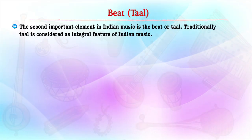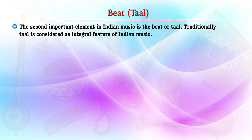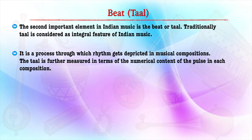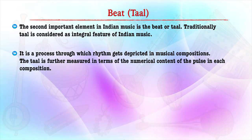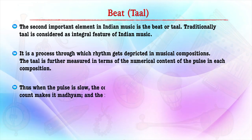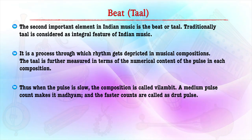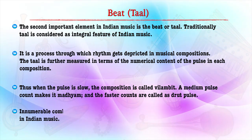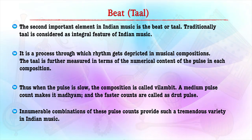Now let us move to beat, commonly known as tal. The second important element in Indian music is beat or tal. Traditionally, tal is considered an integral feature of Indian music. It is the process through which rhythm gets depicted in musical compositions. Tal is further measured in terms of the numerical content of the pulse in each composition. When the pulse is slow, the composition is called Vilambit; a medium pulse count makes it Madhyam; and faster counts are called Drut.